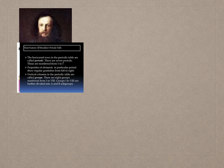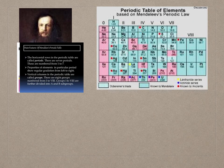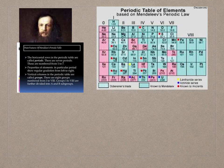The horizontal rows in the periodic table are called periods; there are seven periods, numbered one to seven. Properties of elements in a particular period show regular gradation from left to right. The vertical columns are called groups; there are eight groups, numbered one to eight, further divided into A and B subgroups. On the basis of this arrangement, Mendeleev stated the following periodic law: properties of elements are periodic functions of their atomic masses.